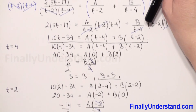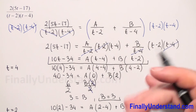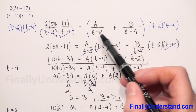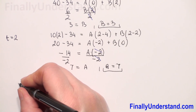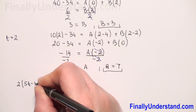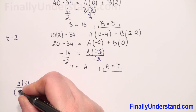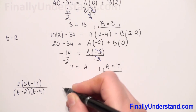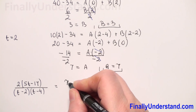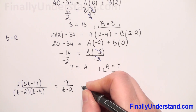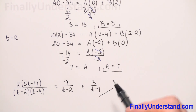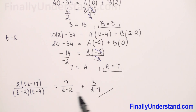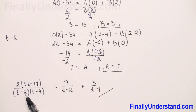Now we come back to our original fraction and rewrite it as the sum of two partial fractions. We have 2(5t minus 17) over (t minus 2)(t minus 4), which equals 7 over (t minus 2) plus 3 over (t minus 4). This is the solution. You can always check by adding the two fractions — you will get exactly the same expression we started with on the left side.